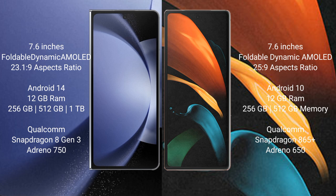The Samsung Galaxy Z Fold 6 runs on the Android 14 operating system. The Samsung Galaxy Z Fold 2 runs on the Android 10 operating system. The Samsung Galaxy Z Fold 6 comes with 12GB RAM and 256GB, 512GB, or 1TB of internal storage.